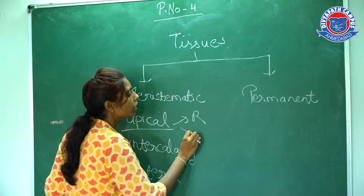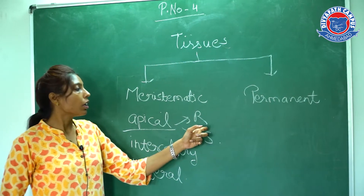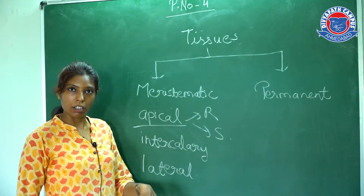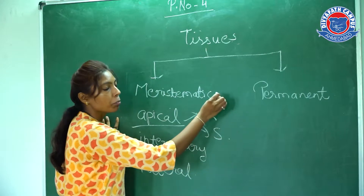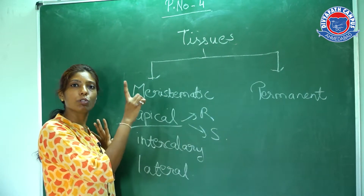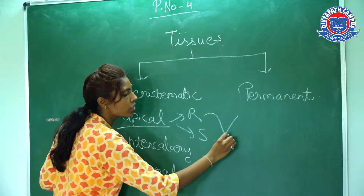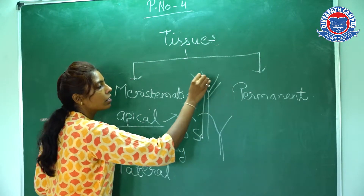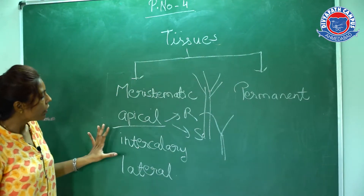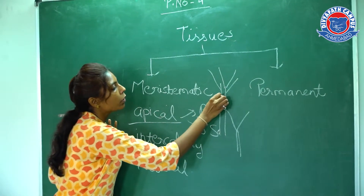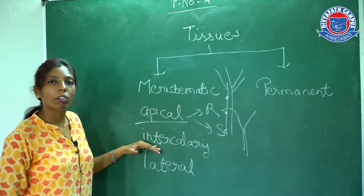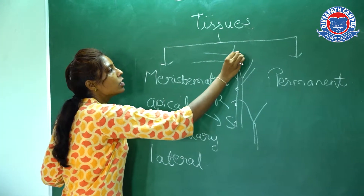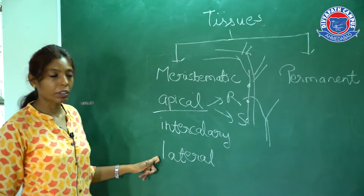The apical meristem can be a root or shoot apical meristem. If it is root, then that part of the plant will grow towards the soil — that is geotropic. And if it is the shoot part, then it will move towards the sky — that is phototropic, towards the light. The root will grow to form the root system, and the shoot will form branches and the whole stem. The portion between two nodes will be formed from the intercalary meristem, and lateral branches will be formed from the lateral meristem.